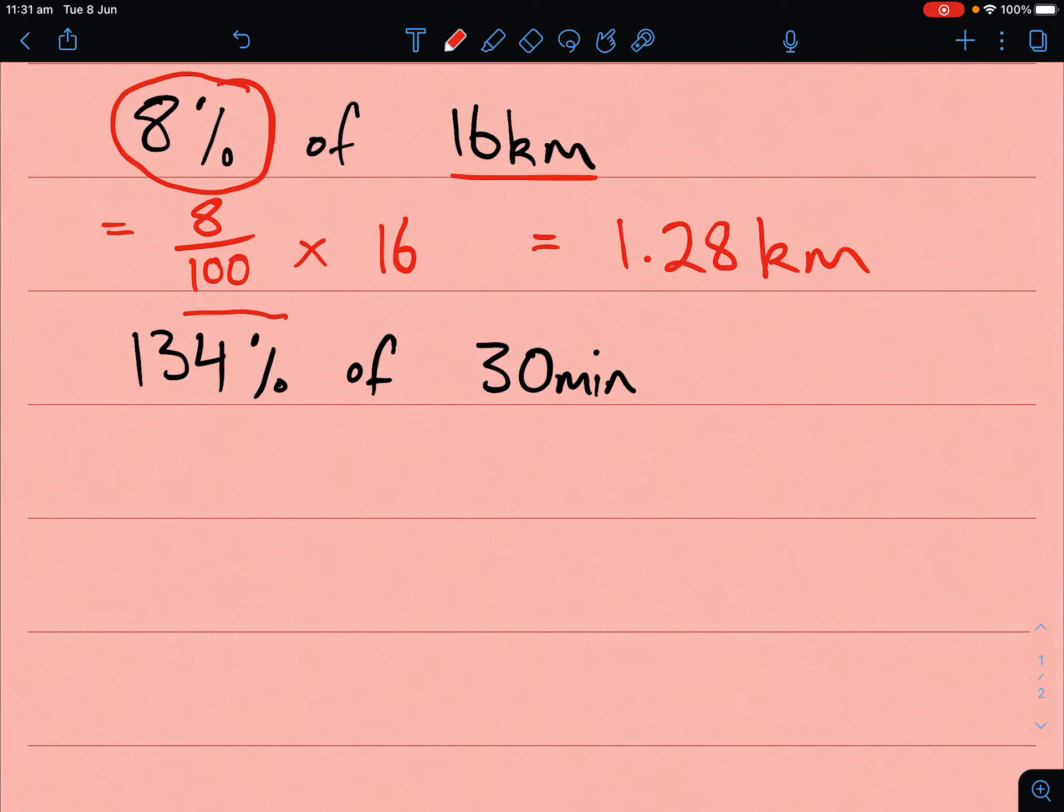One last example. This time we've got 134% of 30 minutes. This might be for a test at school and we found out that someone went over time. So rather than using up 100% of the time, which would be 30 minutes, they've actually used 134% of the time they were allocated. We want to know how long did they actually run over their test time.